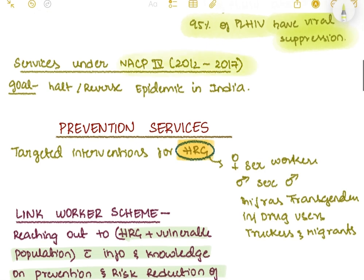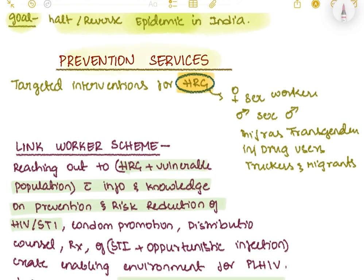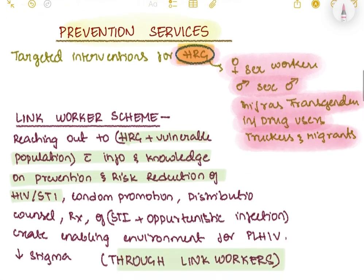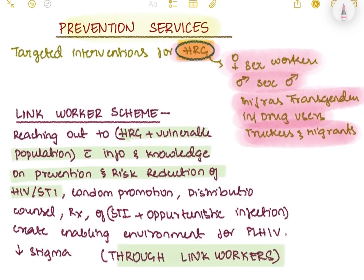Under NACP 4 (2012–2017), the goal was to stop or reverse the epidemic in India. Prevention services include targeted interventions for high-risk groups: female sex workers, males having sex with males, hijras, transgenders, IV drug users, and migrants.